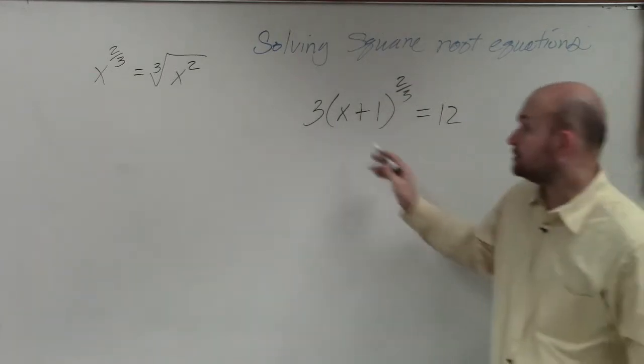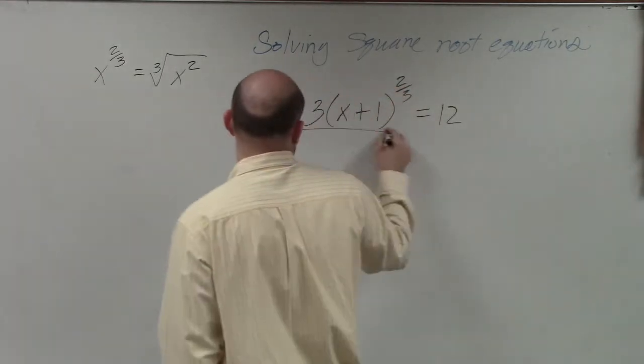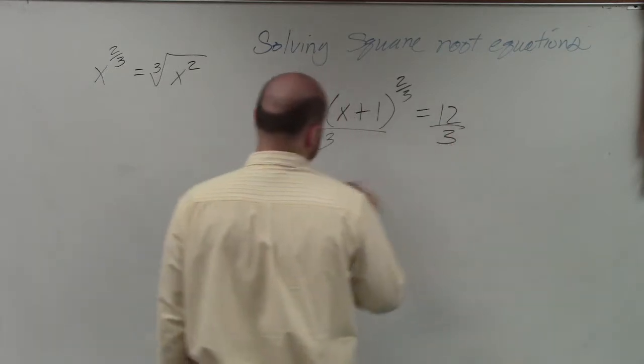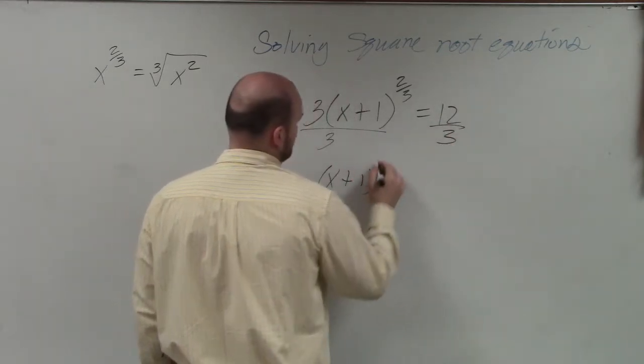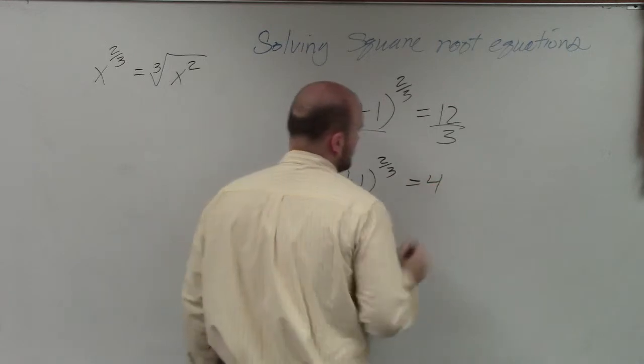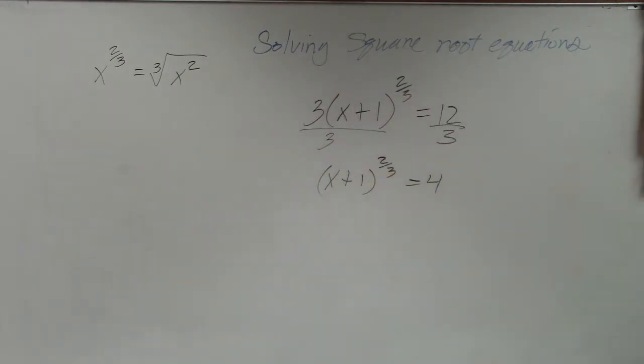So the first thing we're going to do is I'm going to undo multiplication by 3. So I'll divide by 3 on both sides. So now I have x plus 1 to the 2/3rds equals 4.